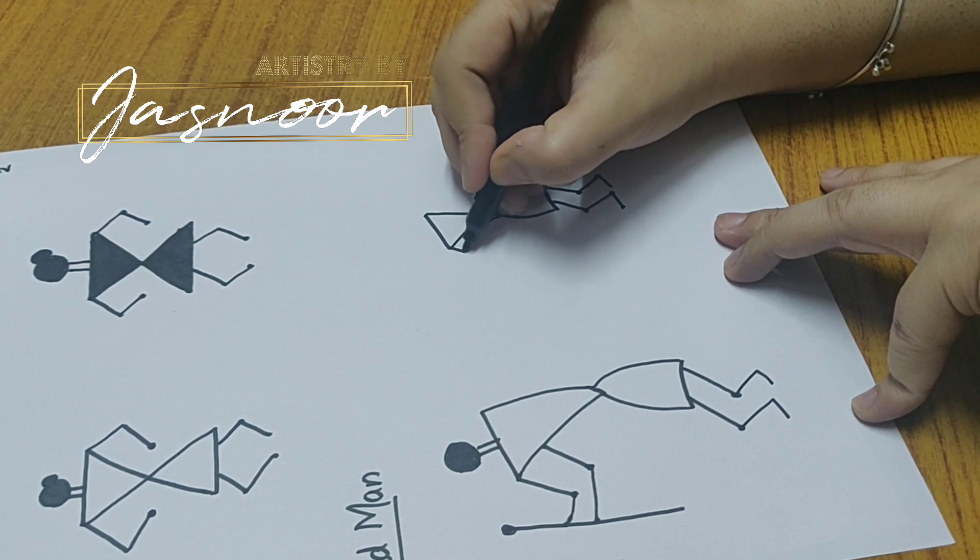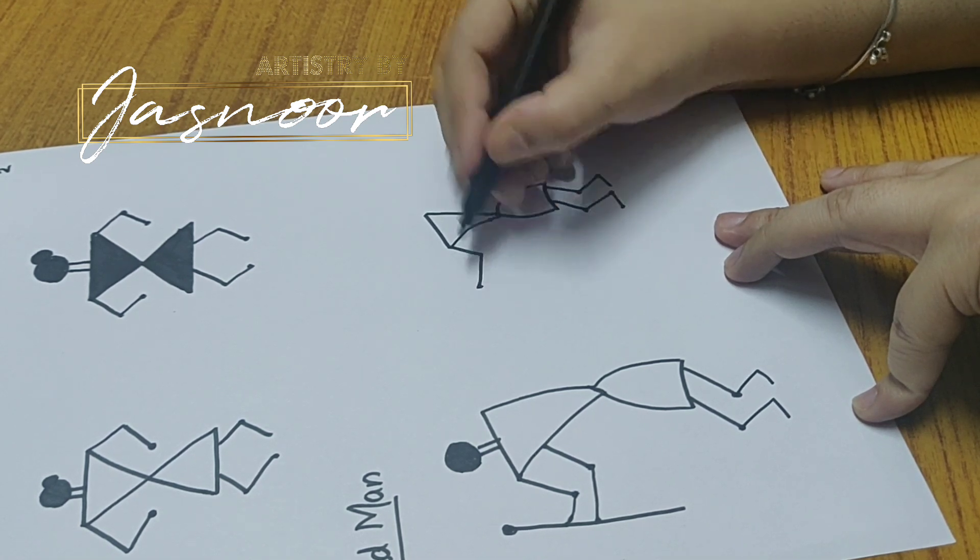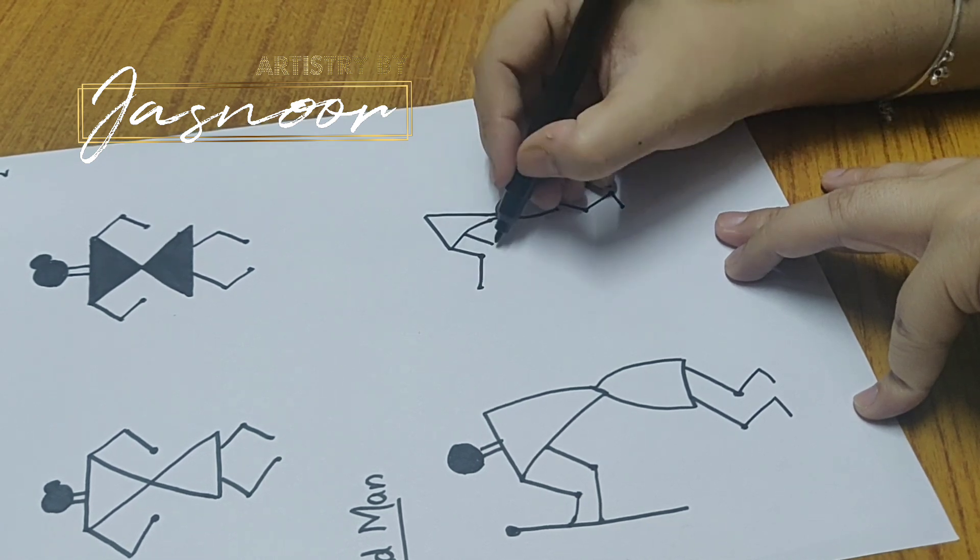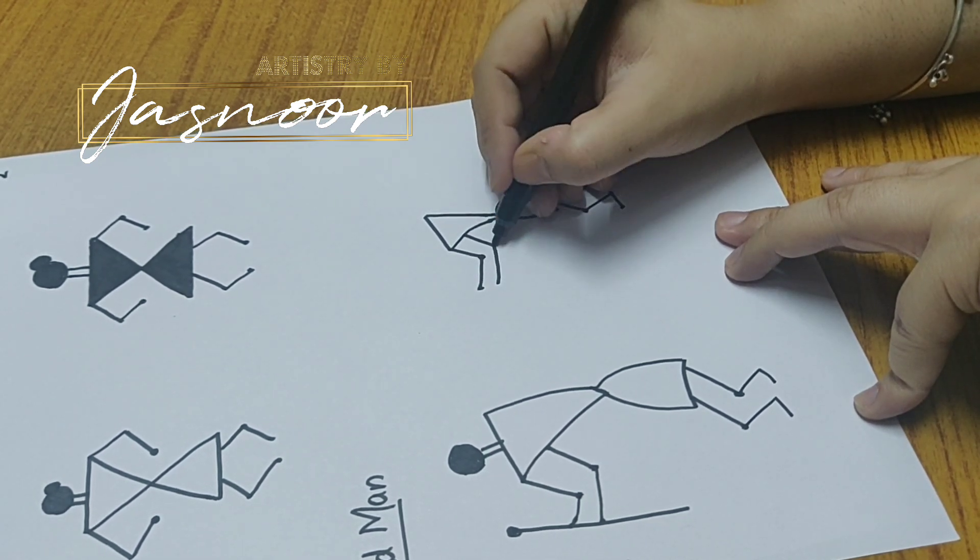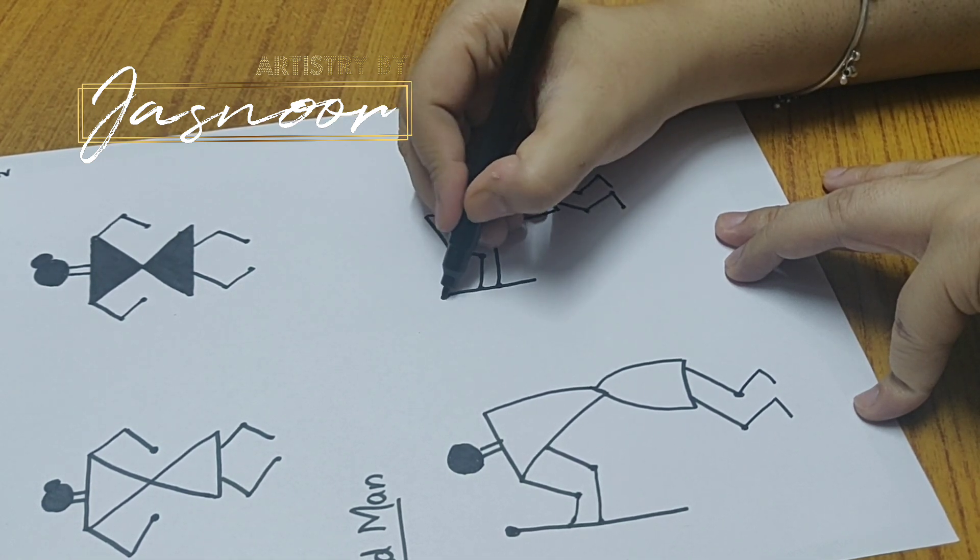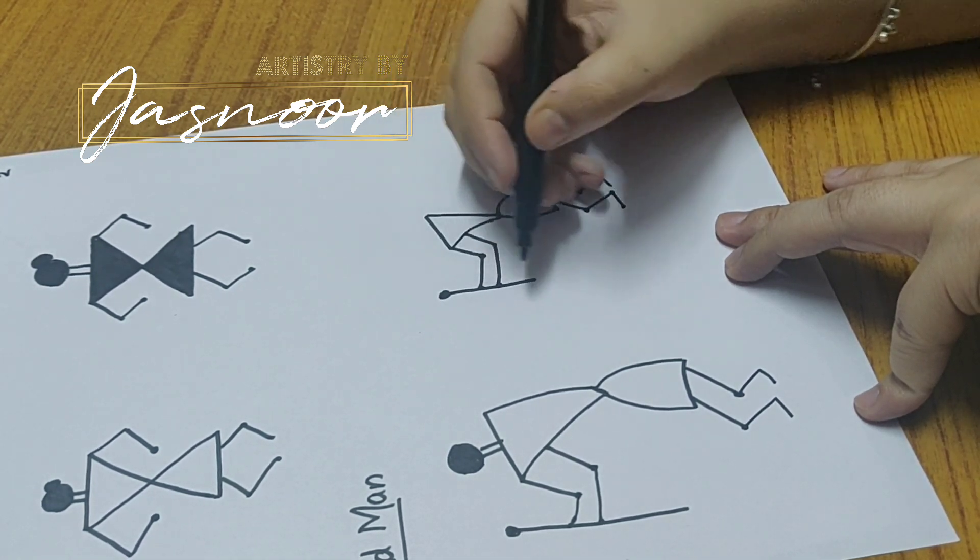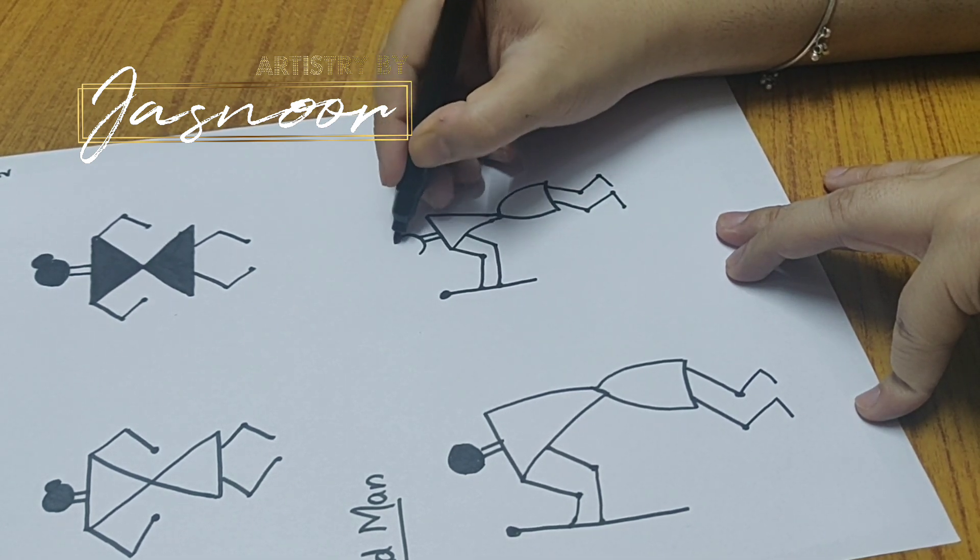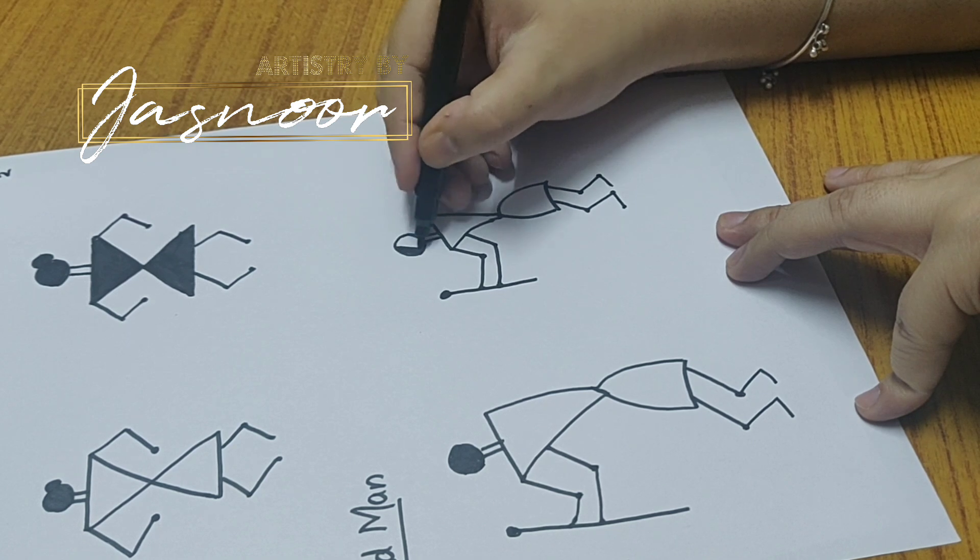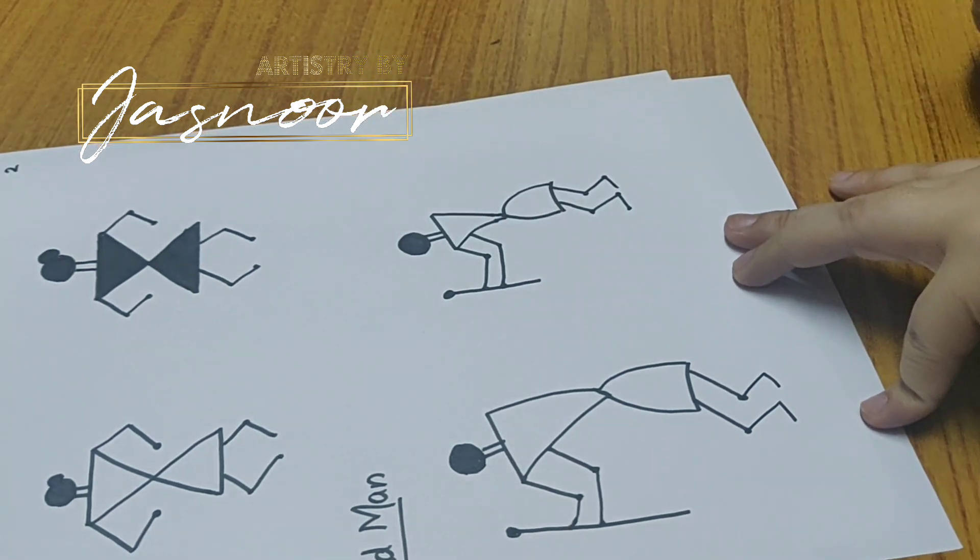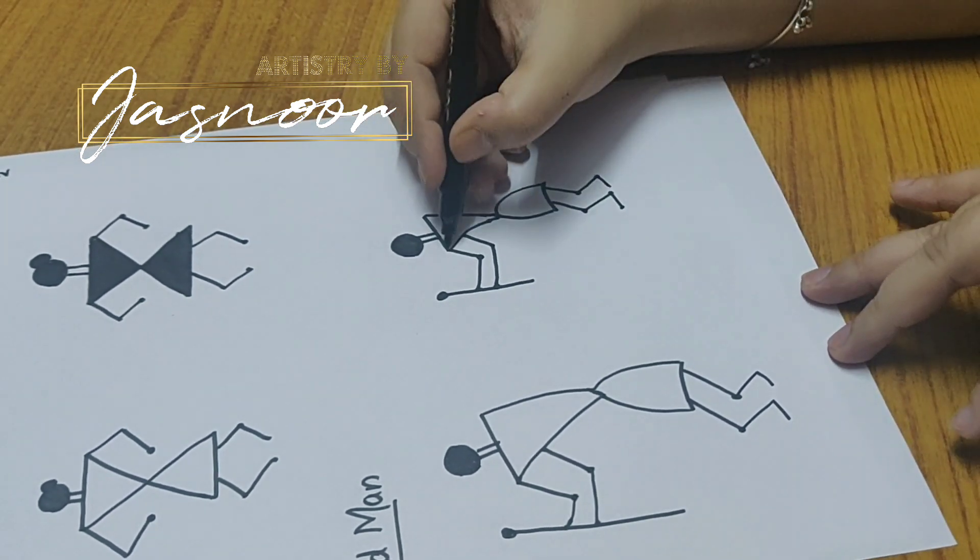Then for the hands. Yeh peeche se hand aata hua hamne dikha rahe hain. And haath mein hamne a stick de rahe hain. Because old man show kiya hai, to it should have a stick or something for easy depiction. And the face. Agar aap old man hai, to aap a simple face banayenge. Agar aap old woman ya lady banayenge, to aap ispe bun laga sakte hain. To it will become a lady. And again we will be shading this part.